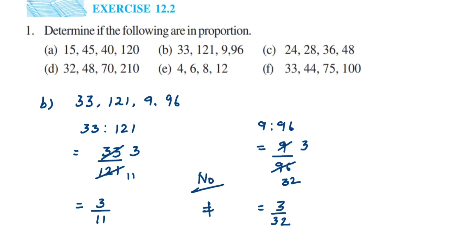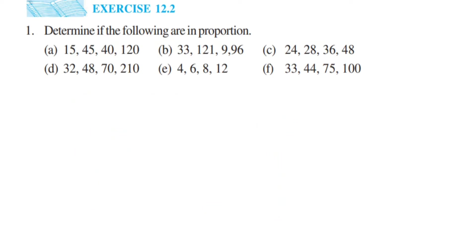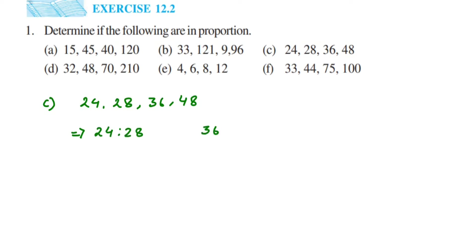Third question: we have 24, 28, 36, and 48. First ratio is 24 is to 28, second is 36 is to 48. For 24 by 28: cancel in the four table — four sixes are 24, four sevens are 28 — so we get 6 by 7. We cannot cancel further.